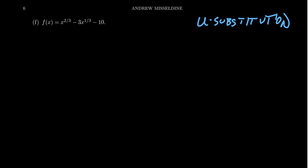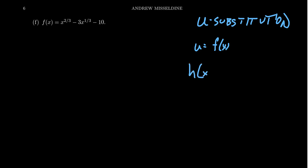So what does u-substitution mean? We're going to take some function f(x) and replace a complicated form with u. Basically, we're recognizing there are two functions in play. We have h(x) equal to some composition of functions, like h = g composed with f. We recognize an inner function u and use that to help us solve.